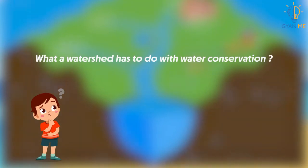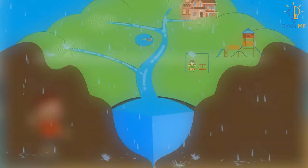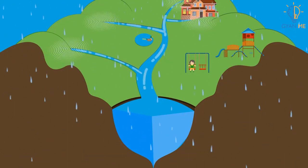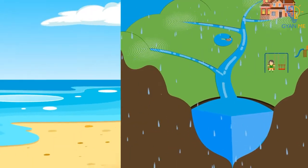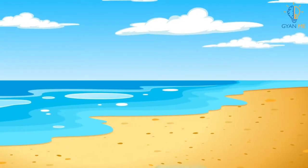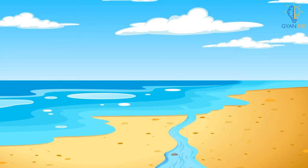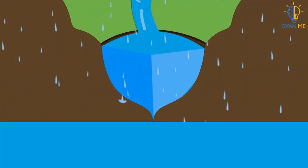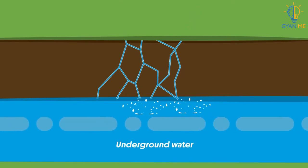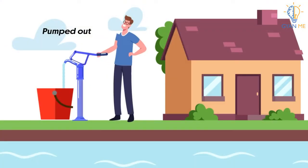But you may be wondering what a watershed has to do with water conservation? It is simple. Once the rainwater or snow-melted water from the mountains reaches the watershed areas, we must prevent it from flowing into the oceans. It is because once this fresh water mixes with oceans, it becomes salty and is of no use to us. Instead, we must allow this water to seep into the soil by building an underground water table, and the stored water in creeks and rocks underground can be pumped out whenever it is required.